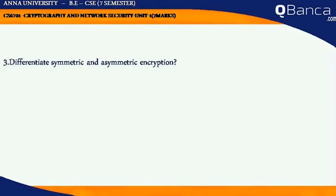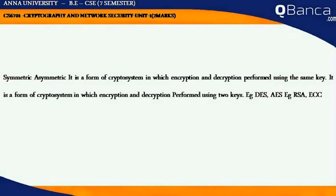Differentiate Symmetric and Asymmetric Encryption. Symmetric encryption is a form of cryptosystem in which encryption and decryption are performed using the same key. Asymmetric encryption is a form of cryptosystem in which encryption and decryption are performed using two different keys.